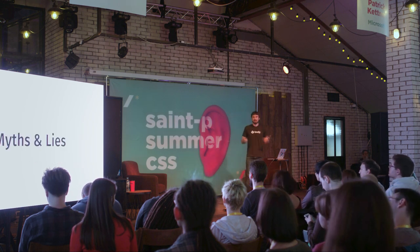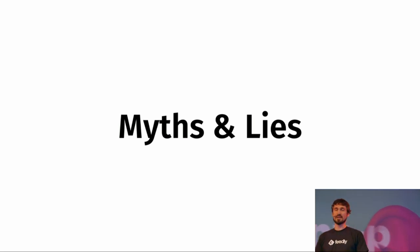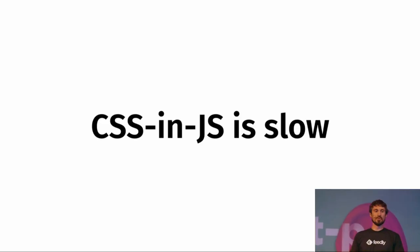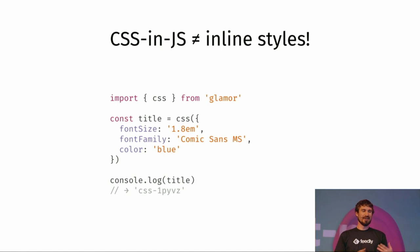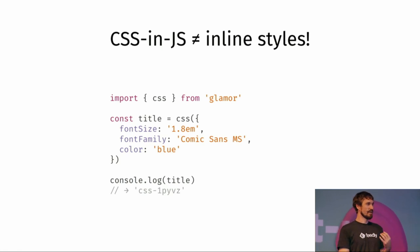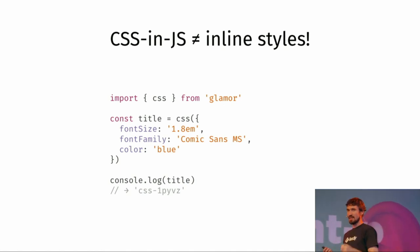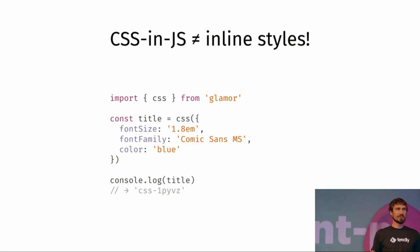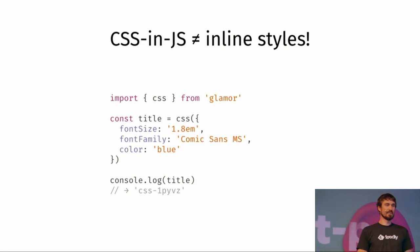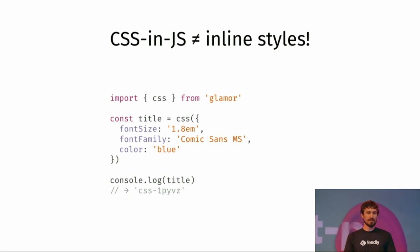Now let's go to some myths and lies, because there are lots of misconceptions and miscommunication between communities. The first one is: CSS-in-JS is slow, don't use it. First of all, it's not inline styles. When you write code like this and console log it, it produces a unique class name — and that's exactly the point. The library guarantees you're safe to use it. There are no collisions. You can generate different styles for different blocks with zero collisions. And as you can see from this code, you can use it with any library, not just React.